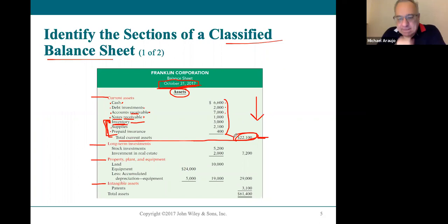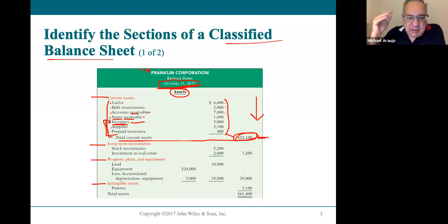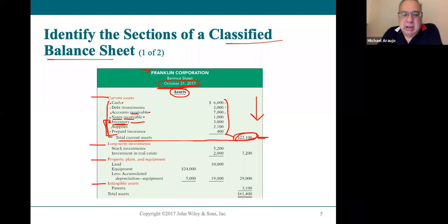On a classified balance sheet, the total current assets are listed in the far right column. For the Franklin Corporation balance sheet, total current assets are $22,100. Keep the Franklin Corporation balance sheet handy — it has a good list of accounts in their proper order. Order is important on a classified balance sheet.